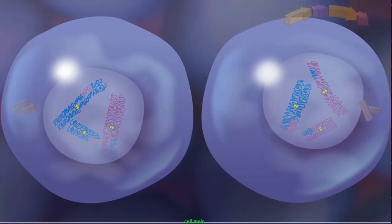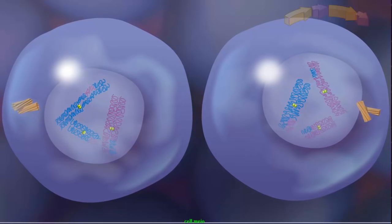Since the final product of meiosis I is two haploid cells, meiosis II begins without the chromosomes going through another round of DNA replication.